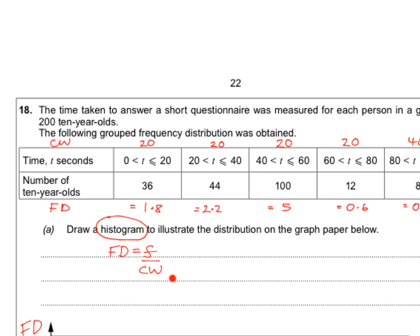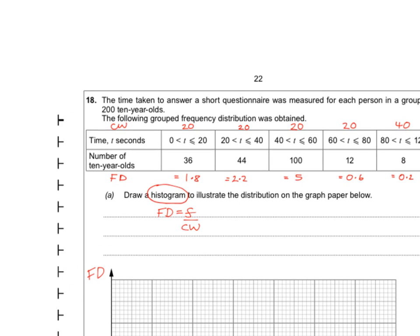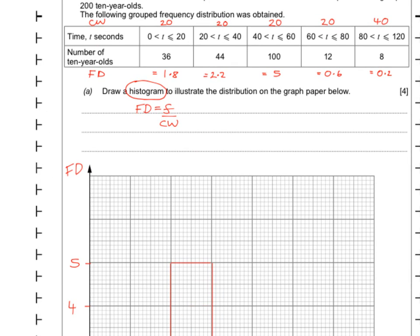I wrote out the formula: frequency density equals frequency divided by class width. I then worked out the class widths: 0 to 20 is a width of 20, 20 to 40 is 20, and so on — apart from the last interval, 80 to 120, which has a class width of 40. To find each frequency density I divided frequency by class width: 36 divided by 20 — I split that as divide by 2 then by 10 — and so on for each bar. If your axis does not have frequency density labelled, you can expect 0 marks. The highest frequency density was 5, so I went up to 5 on my scale and filled in all the bars.